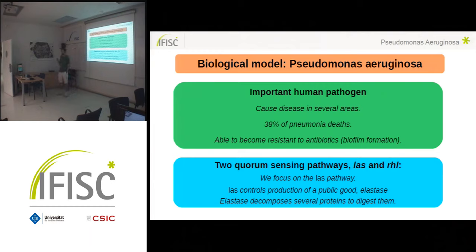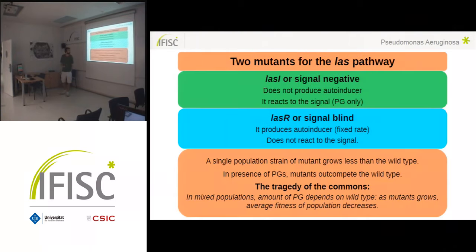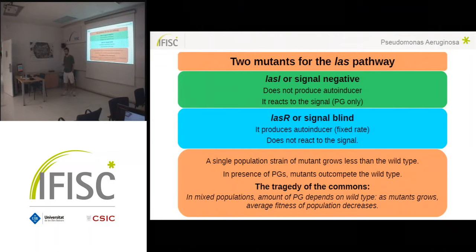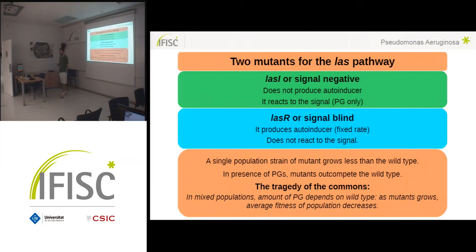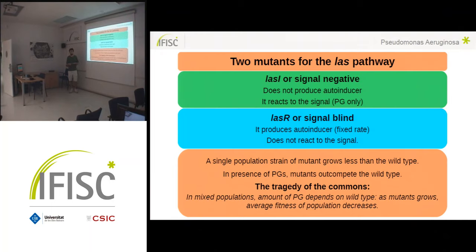We focus on the LAS because it regulates the production of one public good, which is LasB. LasB is used to decompose several proteins that can then be used as nutrients for the bacteria, increasing the reproduction rate. This pathway has two kinds of mutants: the signal negative, which does not produce the signal but is able to react to it producing public goods; and the signal blind, which is not able to react to the signal but produces it at a fixed rate — not exhibiting the two states.